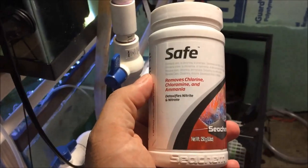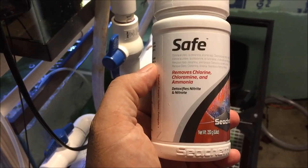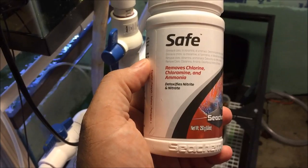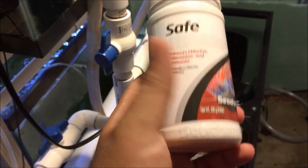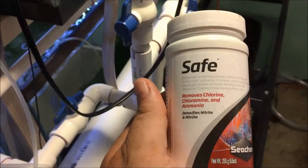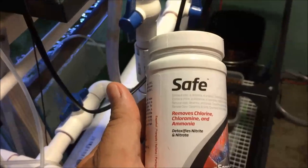Before I do that I'm going to just talk a little bit about Seachem Safe. Removes chlorine, chloramine and ammonia, detoxifies nitrite and nitrate. 250 grams, I think this was 12 or 14 bucks on Amazon. It is essentially the powder form of Prime.